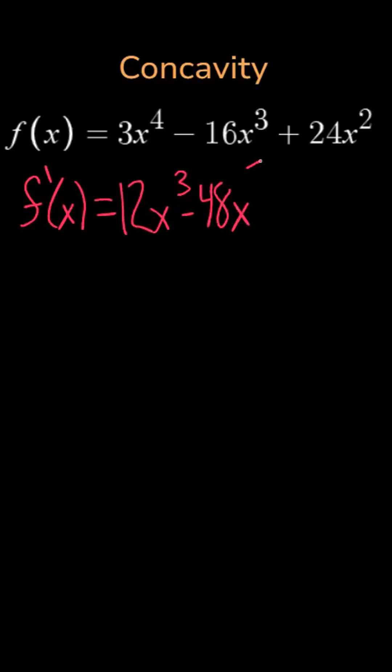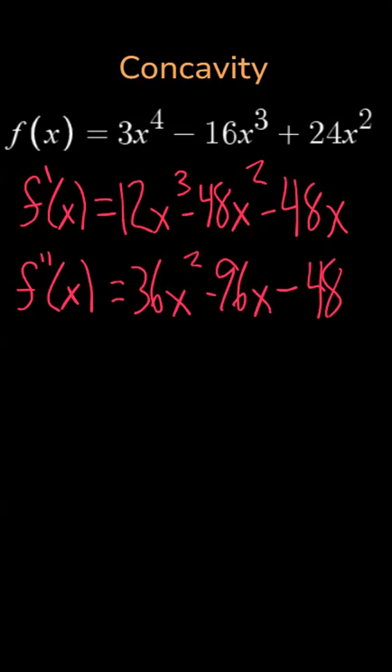So the first derivative is, and the second derivative is, then you set the second derivative equal to zero and solve for x.